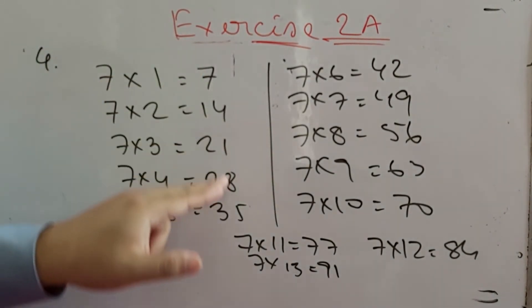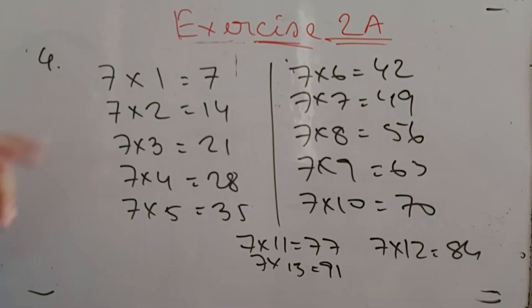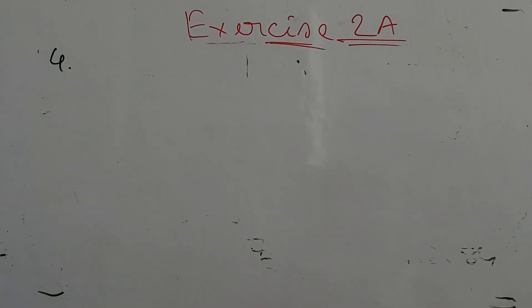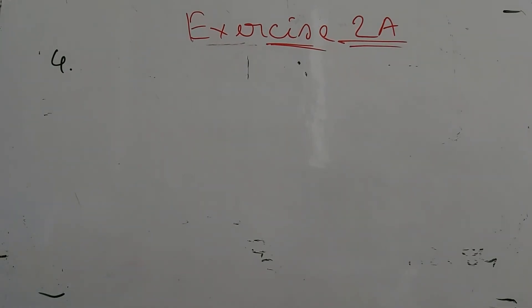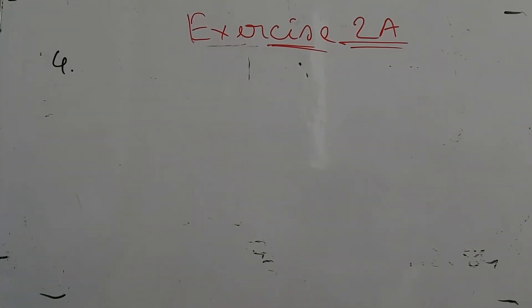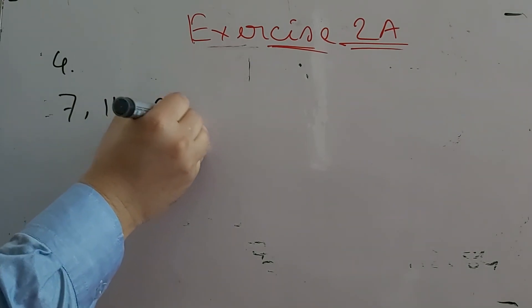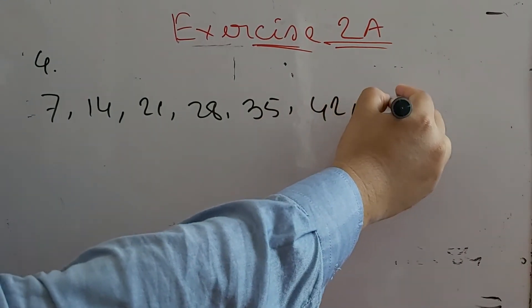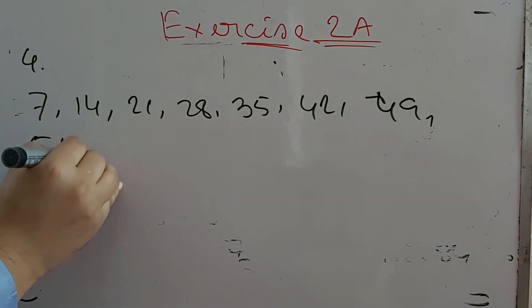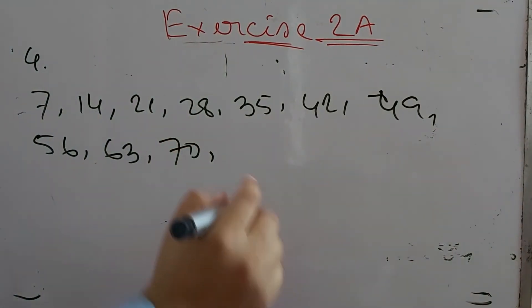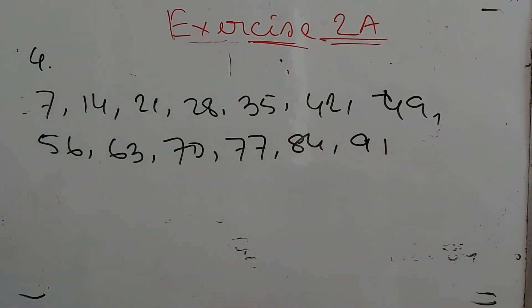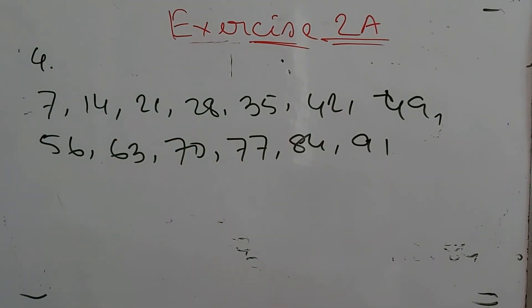Every one of these numbers is divisible by 7. So the answer is the multiples of 7 that are less than 100: 7, 14, 21, 28, 35, 42, 49, 56, 63, 70, 77, 84, and 91.